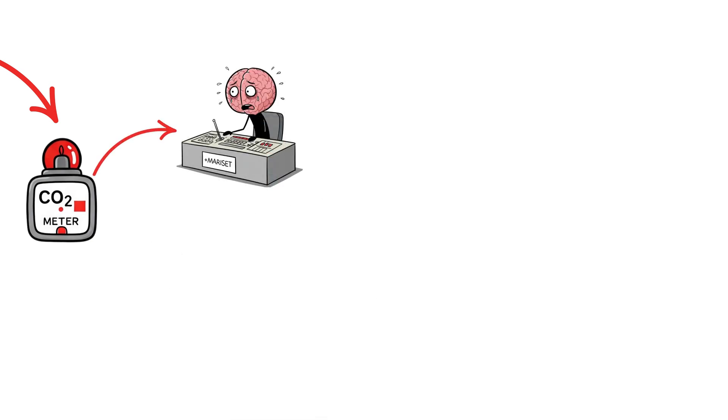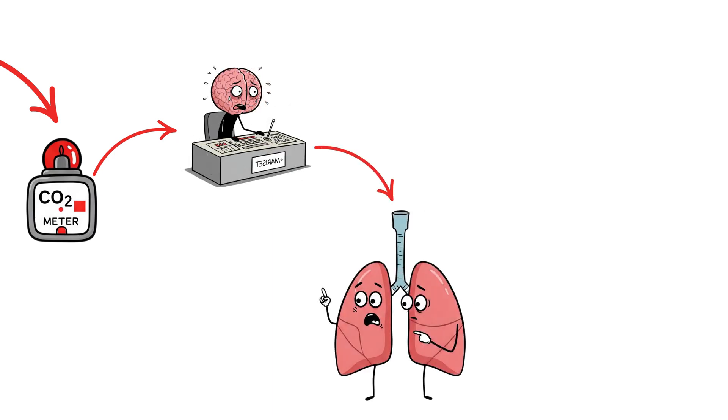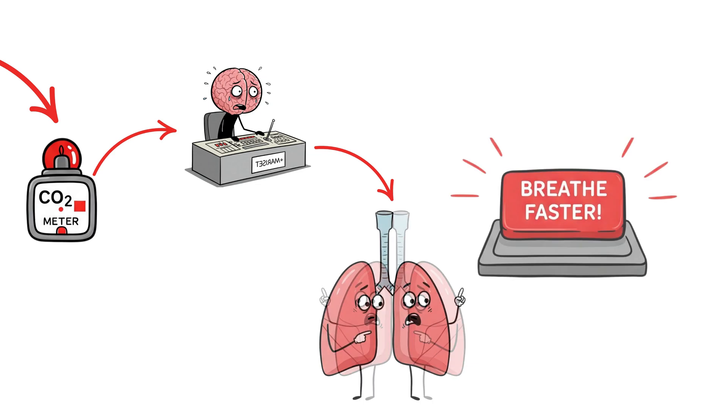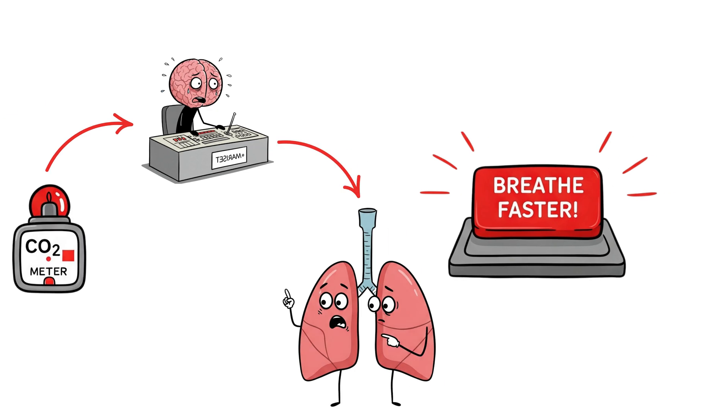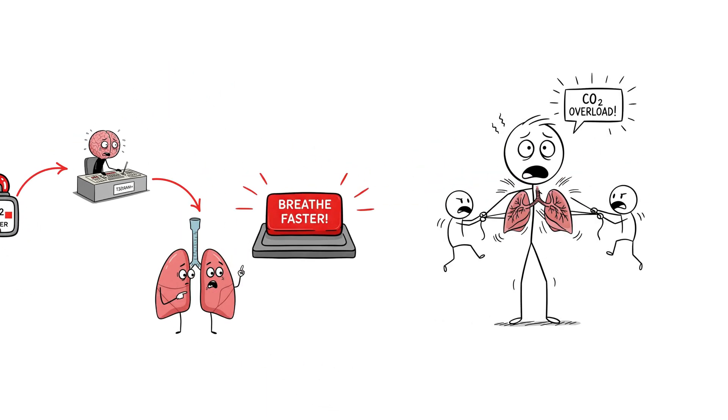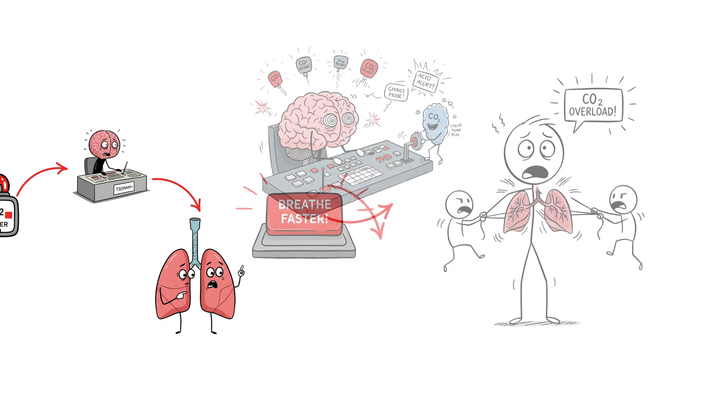The first responder is the respiratory system itself. The brainstem, the control center for breathing, detects the increased CO2 and sends signals to the diaphragm and other respiratory muscles, telling them to work harder. This usually translates to faster and deeper breaths, a desperate attempt to expel the excess CO2 and restore balance. You might notice someone with hypercapnia breathing rapidly and shallowly, or even using accessory muscles in their chest and neck to help them breathe. It's their body trying to compensate.